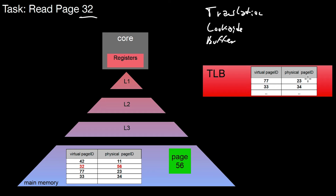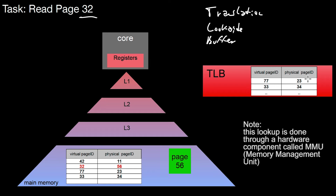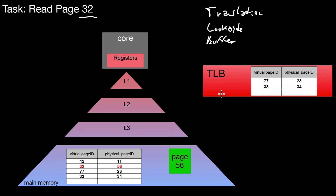Whenever you're interested in a particular address — say page 32 — what the operating system does is it first looks at the TLB to see whether it happens to have that page 32. If that's not the case and we don't have a mapping of virtual page 32, the page table — this prefix structure — has to be consulted. This page table also sits in the standard memory hierarchy, managed by the operating system, or parts of it can be re-implemented by the database system. Basically it boils down to having that data in the standard storage hierarchy, so the same problems may occur.